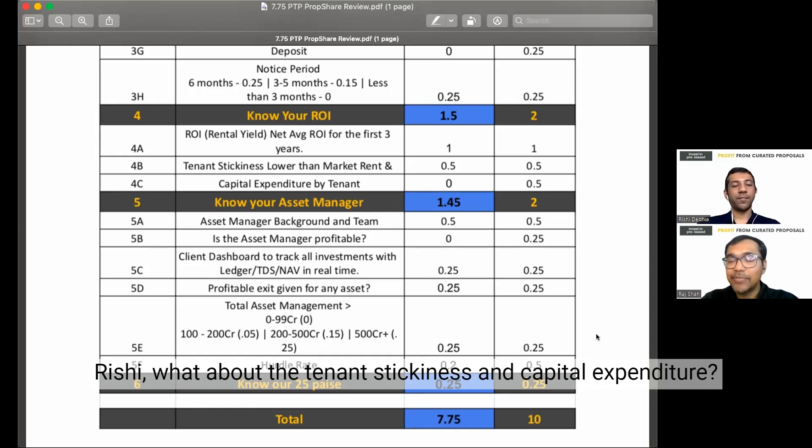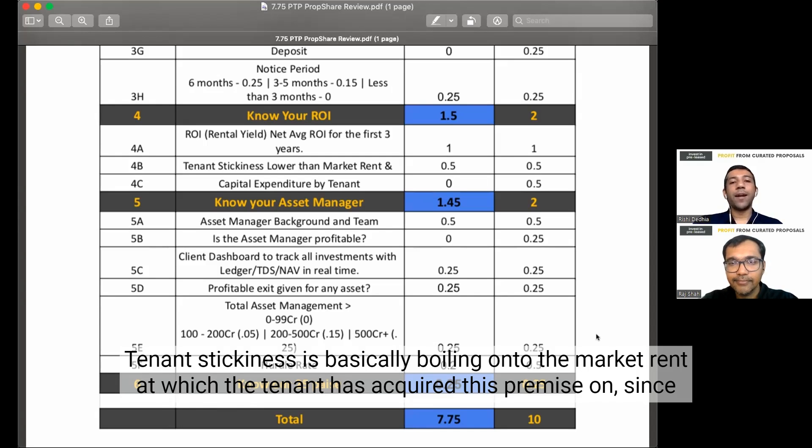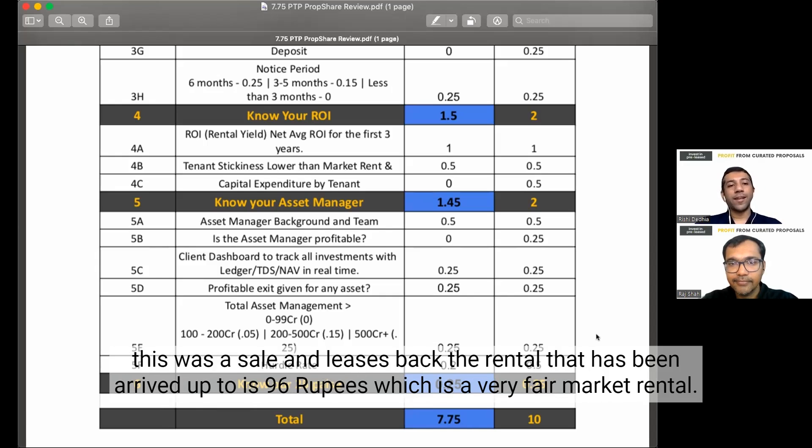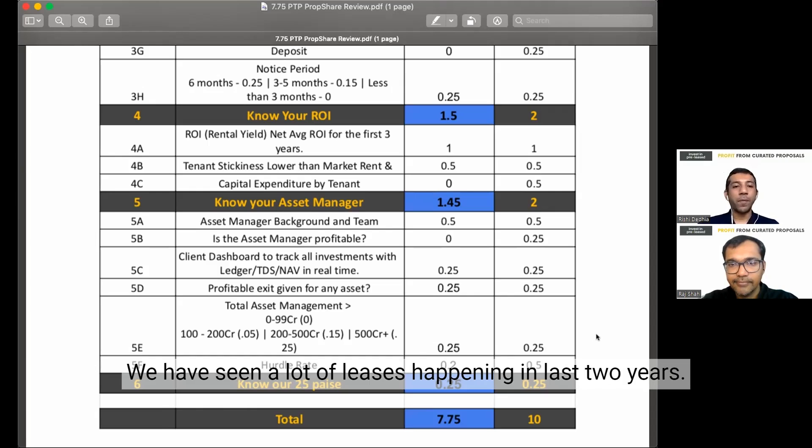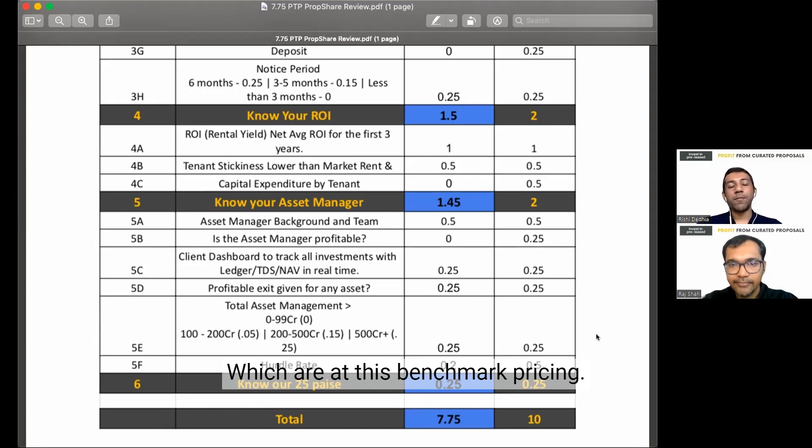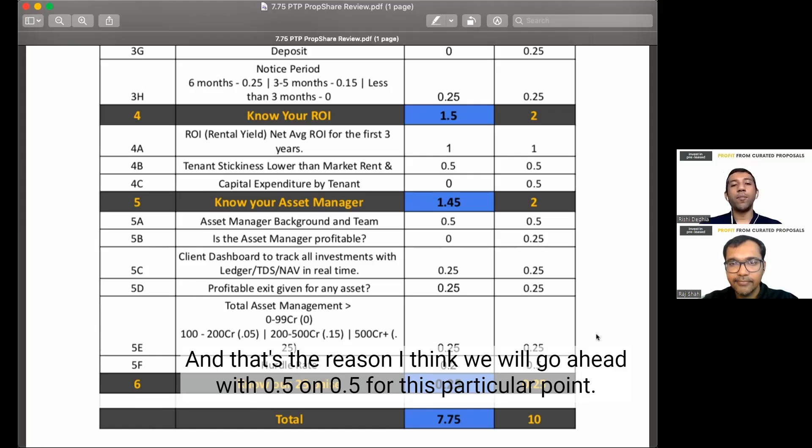What about the tenant stickiness and capital expenditure? Yes, tenant stickiness is basically boiling down to the market rent at which the tenant has acquired this premise. Since this was a sale and leaseback, the rental that has been arrived up to is Rs. 96, which is a very fair market rental. When we look at the average rental around in this location is somewhere around Rs. 90 and Rs. 100. We have seen a lot of leases happening in last 2 years which are at this benchmark pricing. We are a little lesser than the market benchmarking of Rs. 98 to Rs. 100. And that's the reason I think we will go ahead with 0.5 on 0.5 for this particular point.